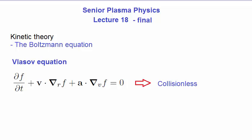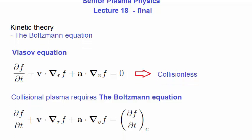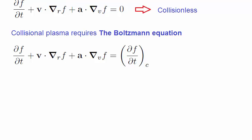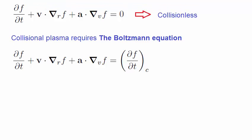But there are situations where the mean collision time is too short for us to use the Vlasov equation. So at that point, we must use the Boltzmann equation, given by this. You'll notice that the difference between it and the Vlasov equation is the term on the right-hand side.